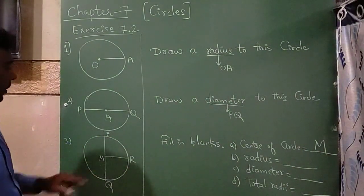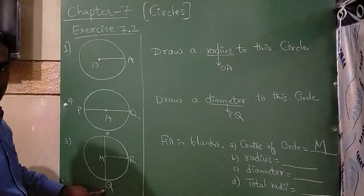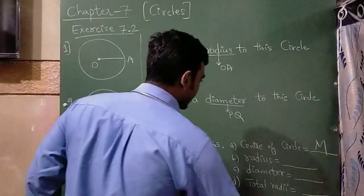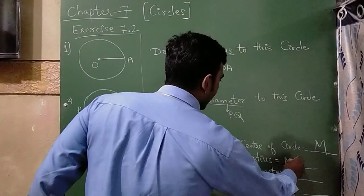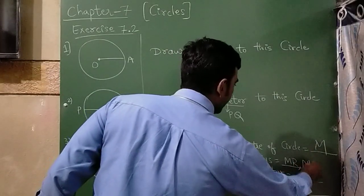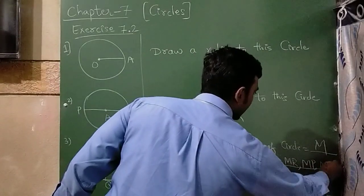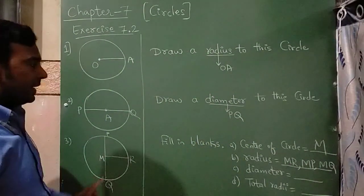Now radius. There are three radius. From M to R, M to P, and M to Q. So there are three radius. So you can write MR, MP, then last one is MQ. There are three radius.